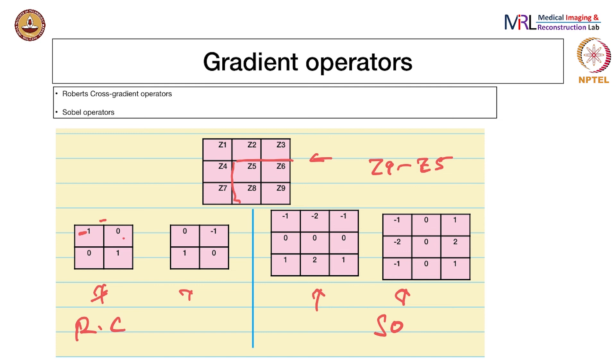Then you can calculate the magnitude of the gradient as modulus of this plus modulus of that, or you can square each of them, add them, and take the square root. You can do similar operations with the Sobel operator also.